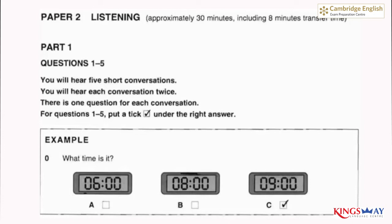Example. What time is it? Excuse me, can you tell me the time? Yes, it's nine o'clock. Thank you. You're welcome. The answer is nine o'clock, so there is a tick in box C.